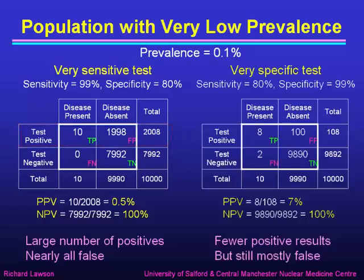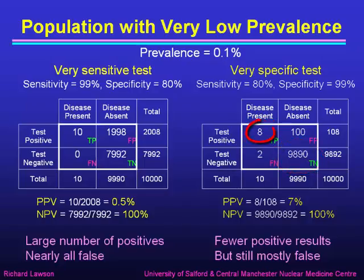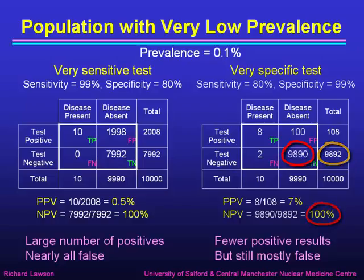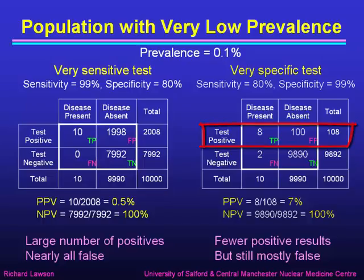What happens if we choose a very specific test? With 80% sensitivity and 99% specificity, we get 8 true positives and 9,890 true negatives. The positive predictive value is 8 out of 108, which is 7% — a little better than before. The negative predictive value is 9,890 over 9,892, still very close to 100%. We have fewer positive results — dropping from 2,008 to 108 — but they're still mostly false: 100 of those are false. So whatever we do, we have a large number of false positives.